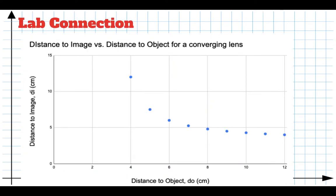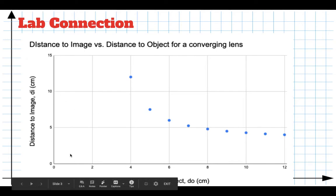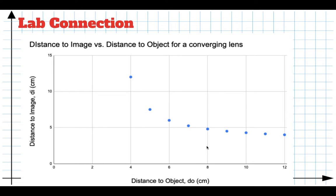In lab, when you investigated the distance to the image and the distance to the object, your original data looked like this. It's kind of hard to make sense of a graph like this — it looks a little bit like a rational function, but with some asymptotes. As this graph gets closer and closer to 3, it goes to infinity, and it never gets below 3 on this axis either. So instead of 0,0 being our asymptotes, we have asymptotes at 3 and 3. That makes this difficult to analyze.